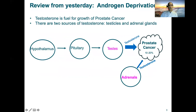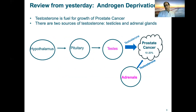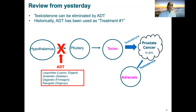As we learned yesterday with regards to androgen deprivation therapy, testosterone is fuel for growth of the prostate cancer. There are two sources of testosterone: the testicles and the adrenal glands. Testosterone that comes from the testicles can be eliminated by androgen deprivation therapy. Historically, we would term elimination of testosterone from the testicles ADT, or the very first treatment that we would use in this setting.